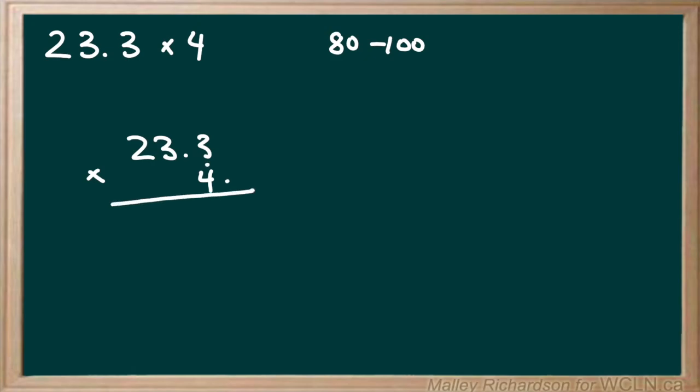First we want to take our 4 and multiply it by every digit on top. So we have 4 times 3 which is 12. So we bring the 2 down and then carry the 1.